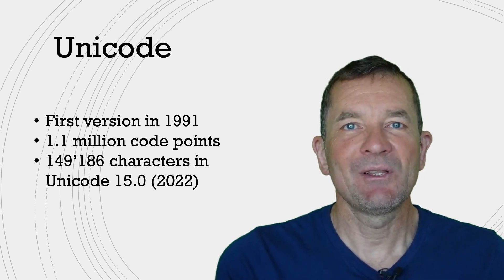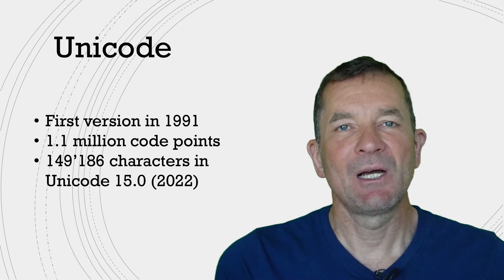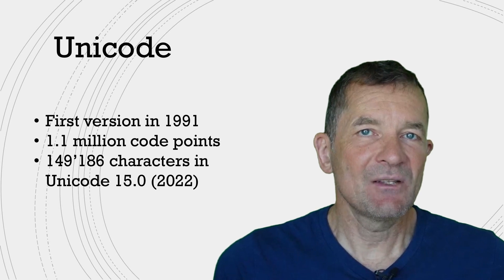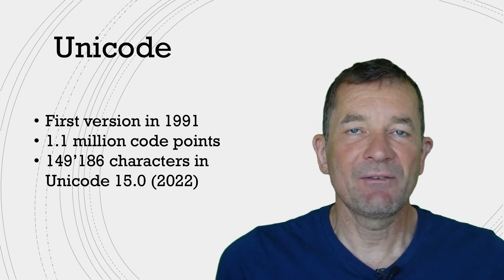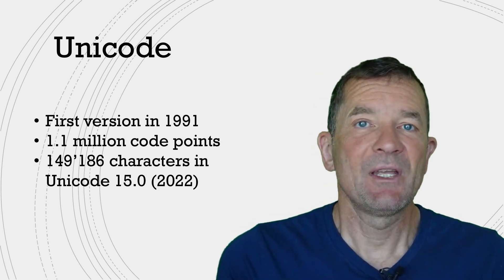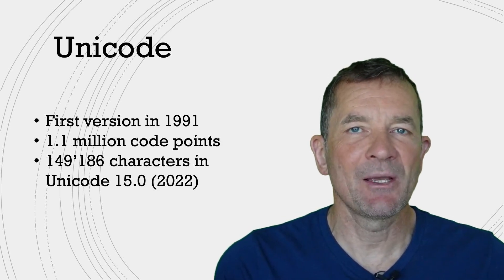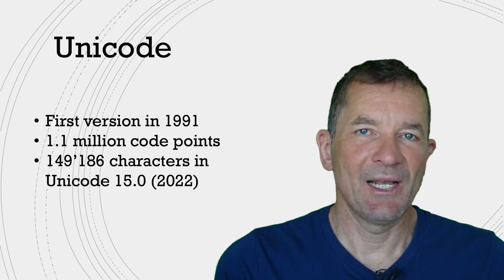And of those, right now in the latest version of Unicode, around 150,000 characters are actually assigned, and characters in that case is a little loosely defined. For example, the emoji that you know from your phones and other places where people are using them, these are part of Unicode as well.